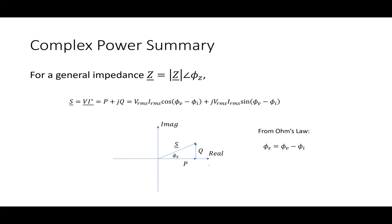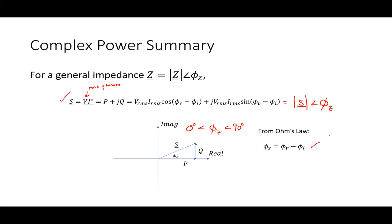So in summary, the complex power S equals V I conjugate, where the assumption is that these are all RMS phasors — we'll use those exclusively unless told otherwise. Complex power is P plus jQ with our established relationships. We express this as a vector; my assumption here is phi sub Z is positive, placing it in the first quadrant. If I had a capacitive-type load it would be negative, putting it in the fourth quadrant. The angle of the complex power is always the same as the angle of the impedance, which is related to the angle between the voltage and the current.